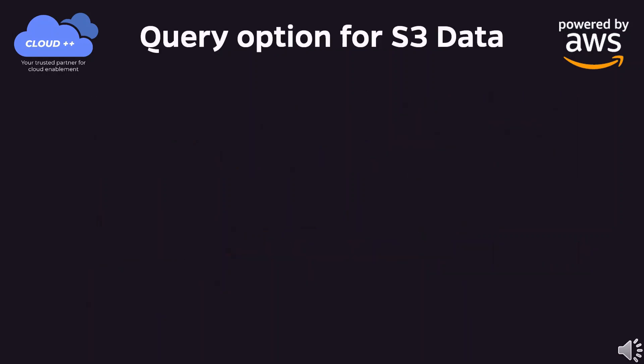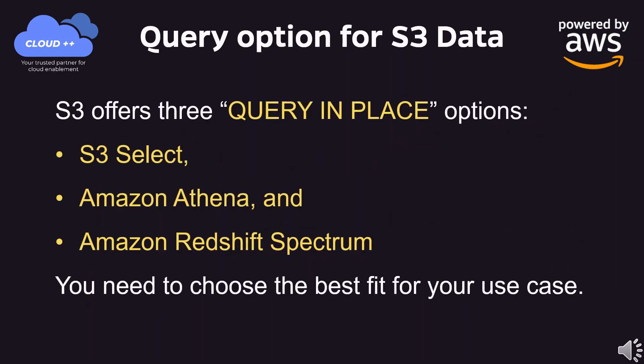S3 offers three query in place options: S3 Select, Amazon Athena, and Amazon Redshift Spectrum. You need to choose the best fit for your use case.